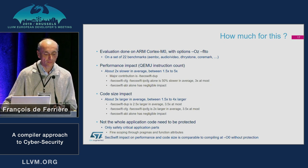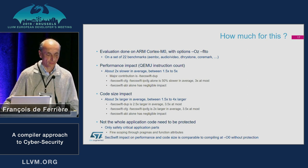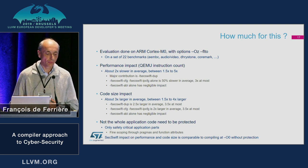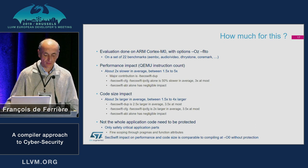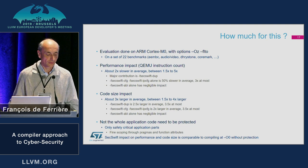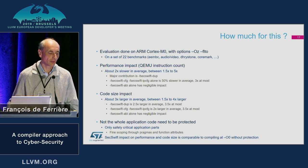Since we have function attribute and pragma instructions, we can very finely tune the scope of the transformations. In some cases, developers compile the application at -O0 to avoid the compiler removing the software countermeasures. The -O0 code is about the same size as code compiled with the SecSwift feature.